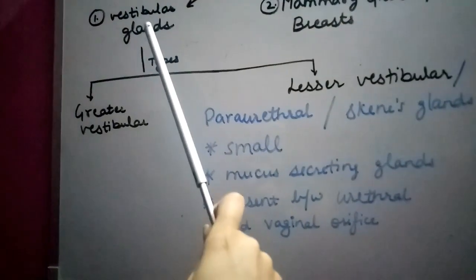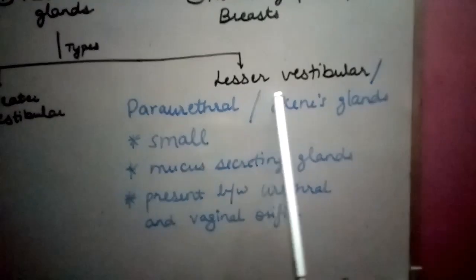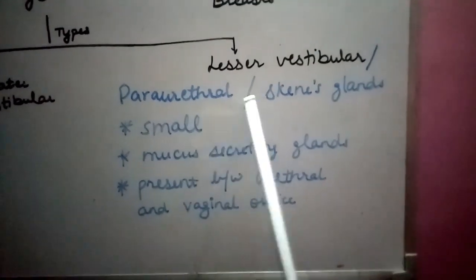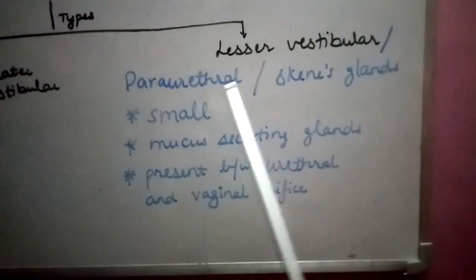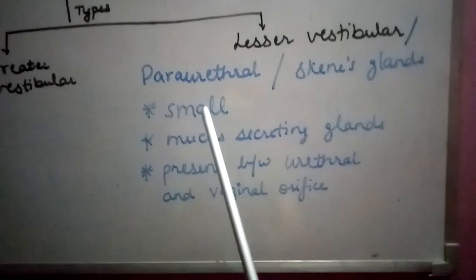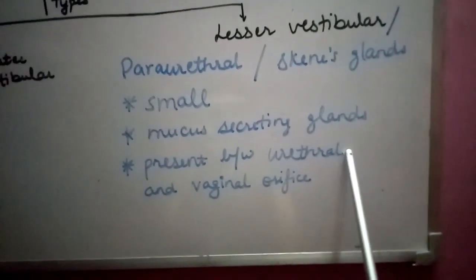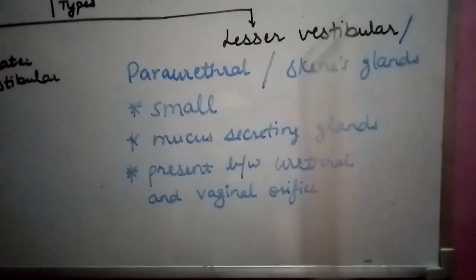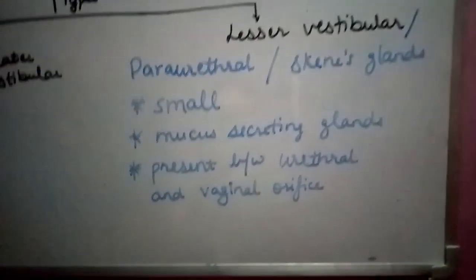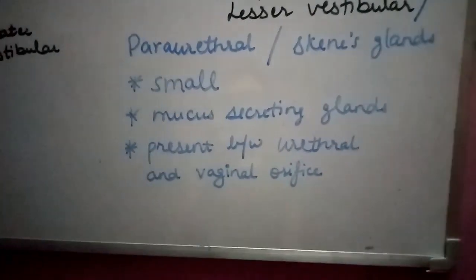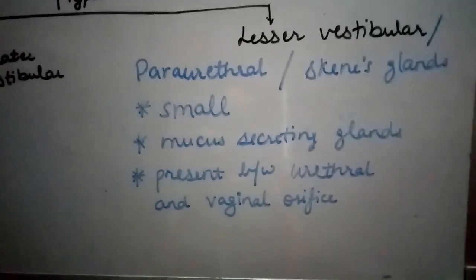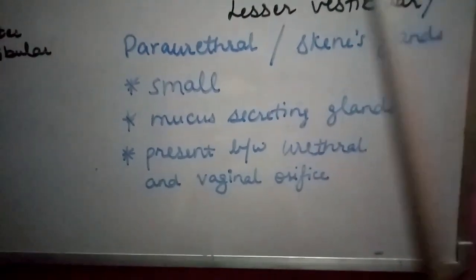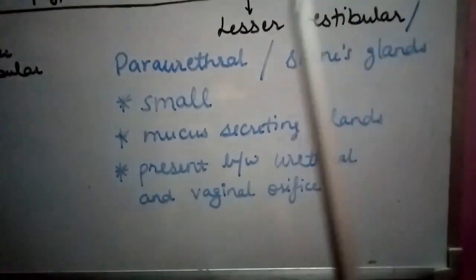The second type of vestibular gland is the lesser vestibular gland, also known as the periurethral glands or Skene's glands. They are very small, mucus-secreting glands present between the urethra and the vaginal opening.